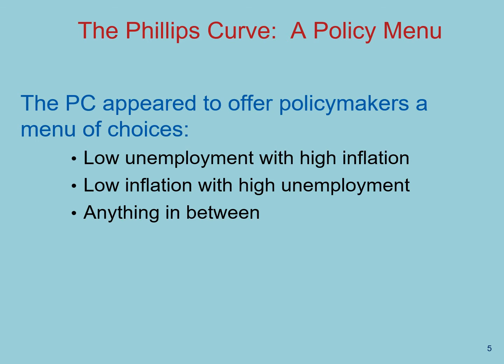Now let's look at this relationship from the perspective of a policymaker. Since fiscal and monetary policy affect aggregate demand, the Phillips curve appears to offer policymakers a menu of choices: either low unemployment with high inflation, or low inflation with high unemployment, or anything in between. Many believed that the Phillips curve was stable and reliable, as evidenced by the data collected in the 1960s. Let's find out what happens next.